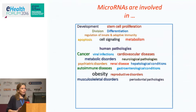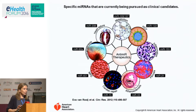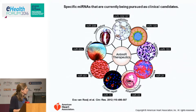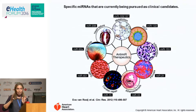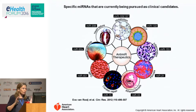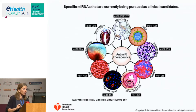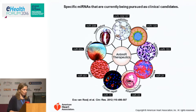MicroRNAs are involved in many diseases and in development. A big number of them are currently being pursued as clinical candidates. When we have disease states, we see around 2,000 genes change, but only about 30 microRNAs change. These very specific small genes are much better biomarkers than the thousands of genes we see changing.